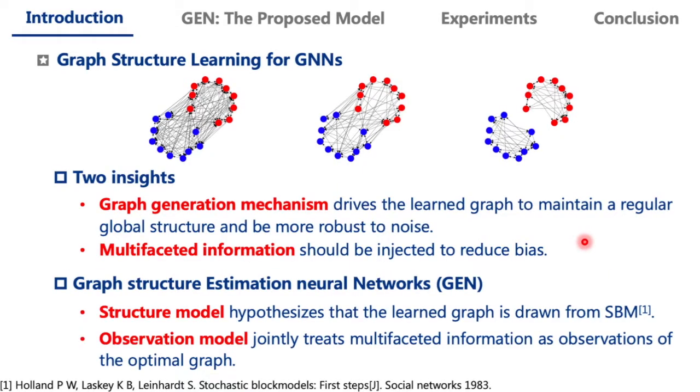We have two insights on this problem. Especially, the graph generation mechanism should be taken into consideration. It is well established in network science literature that graph generation is potentially governed by some underlying principles. Considering these principles fundamentally drives the learned graph to maintain a regular global structure and be more robust to noise in real observation. The second insight is that multifaceted information should be injected to reduce bias.